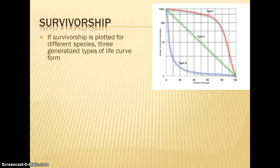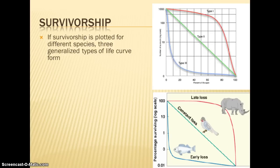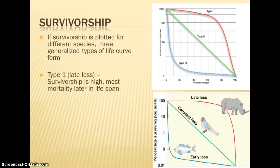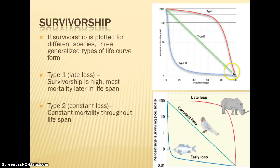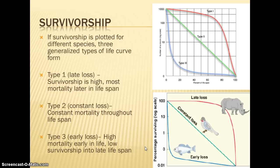Switching gears, another type of curve is the survivorship curve, which has to do with life span — at what age do organisms tend to die? There are three categories. Type 1 is late loss: organisms usually die later in life — these are large mammals and humans. Type 2 is constant mortality: age doesn't play a factor, and the organism is just as likely to die as a child as an adult — birds tend to fall in this category. Type 3 is early loss: organisms tend to die young, which is why some species lay thousands of eggs at a time, because many die very soon after hatching — fish would be an example.